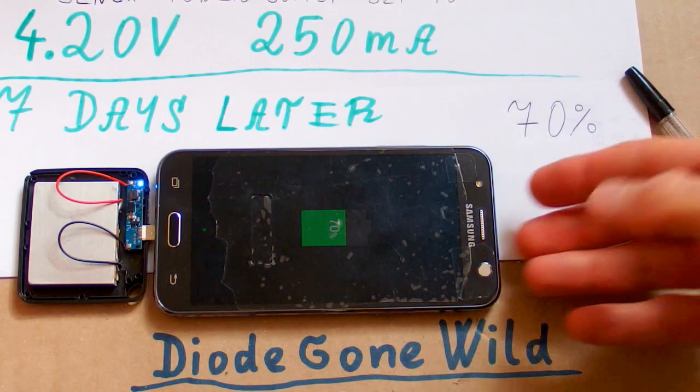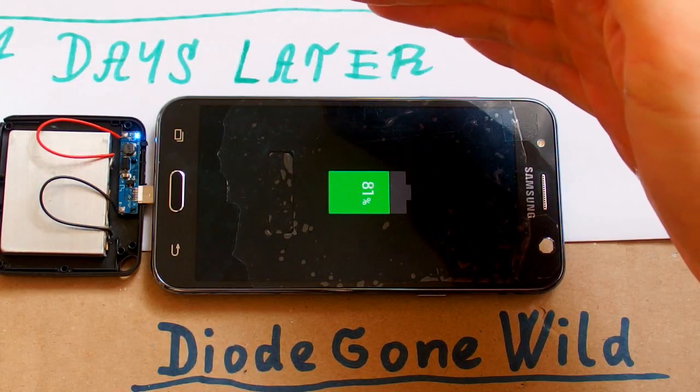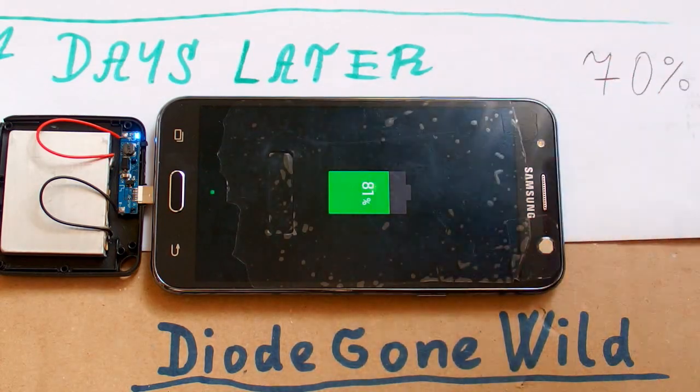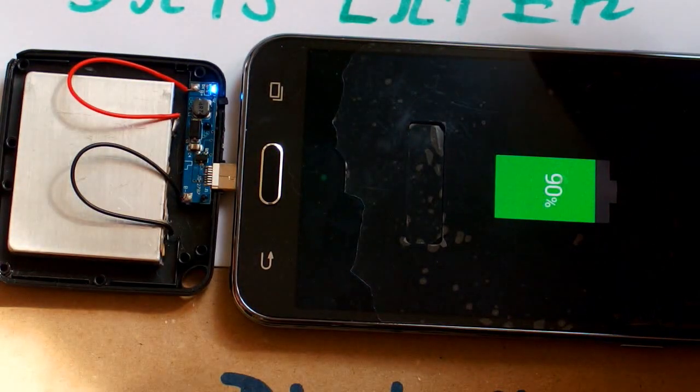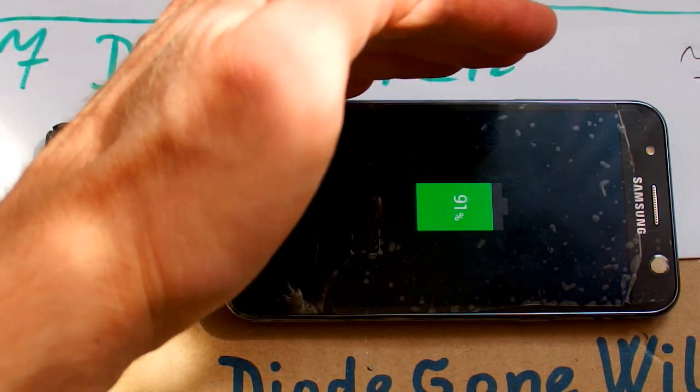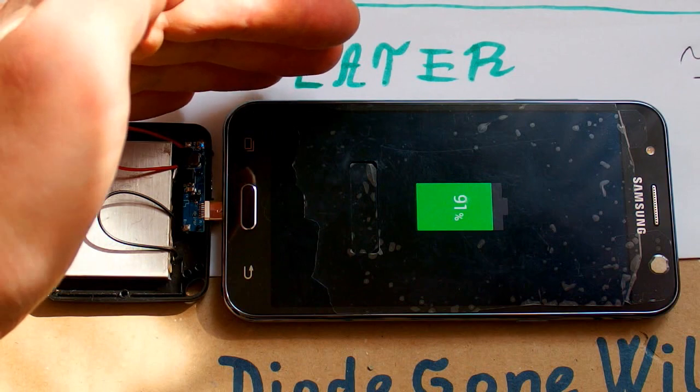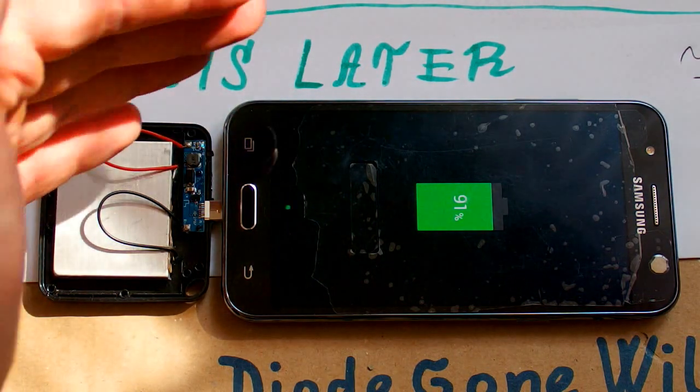Now let's just leave it charging and let's see. Now it's 81 and still charging. 90 and still charging. Now it seems to stop at 91. The LED is blinking and that's the end.